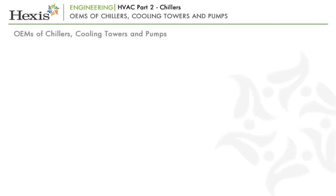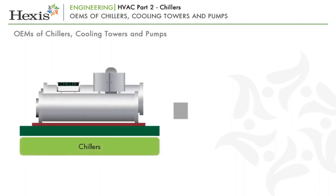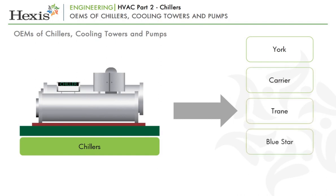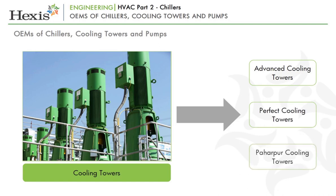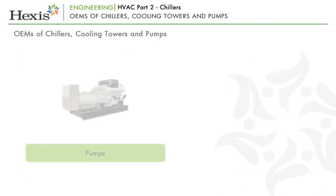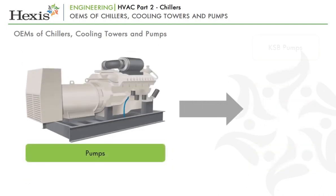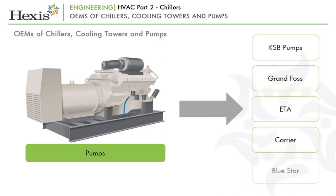Now that we have learnt about the components of chilled water systems, let us have a look at the top manufacturers of chillers, cooling towers and pumps. Top manufacturers of chillers are York, Carrier, Trane, Bluestar and Kirloskar. Top manufacturers of cooling towers are Advanced Cooling Towers, Perfect Cooling Towers and Paharpur Cooling Towers. Top manufacturers of pumps are KSB Pumps, Grand Force, ETA, Carrier and Bluestar.